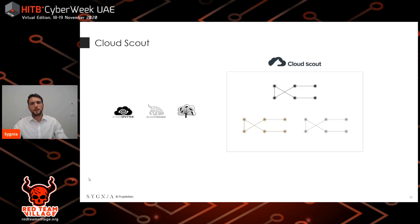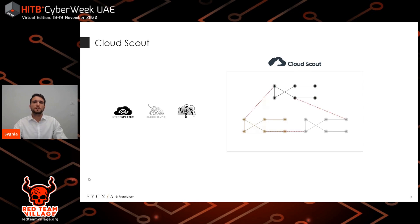Those three tools — StormSpotter, AWS PX, and Bloodhound — are all based on a Neo4j graph database. Therefore, we decided to expand those tools' functionality by merging them under one database, just as with real-life hybrid environments where all organizational infrastructure is interconnected. After we collected all relevant information from cloud and on-prem environments and uploaded it into one single database, we need to find a way to create relations between different node types which are actually linked to one another in the real world, but which we cannot see or visualize using each tool individually.